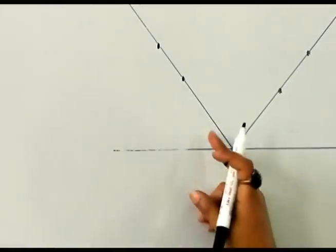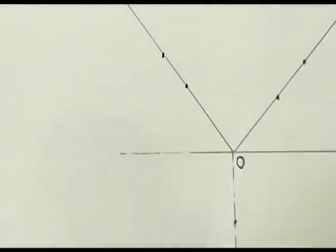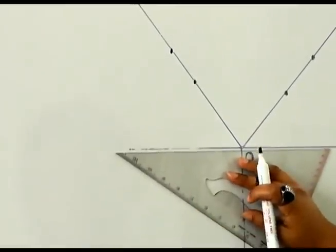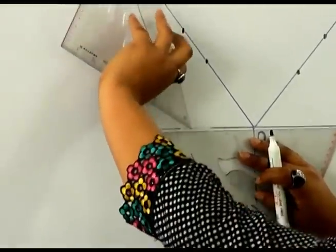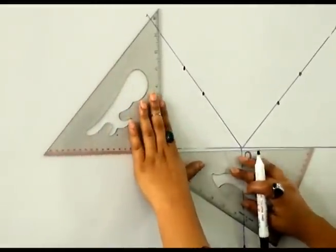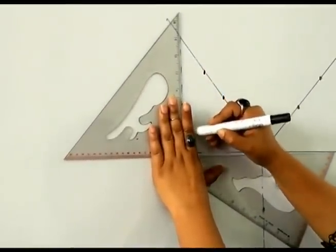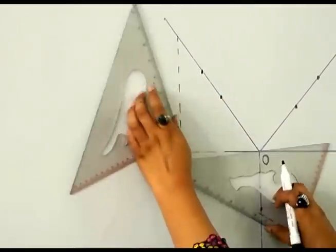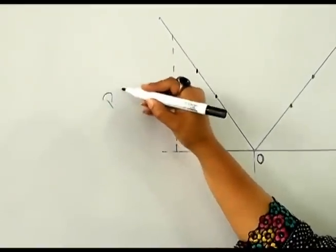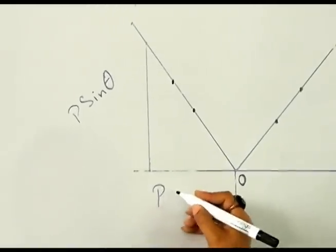First of all, we will draw the horizontal and vertical components of the forces P and Q. For force P, this will be the horizontal component, and on this we will point out the vertical line which is perpendicular with the X axis. This will be the vertical component of force P and its name is P sin theta. Horizontal component of force P is P cos theta.